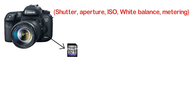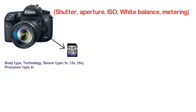The camera is very important. For example: body type, technology, sensor type, 1X, 1.3X, 1.6X crop factors, processor type, in-camera processing, future features, ISO range, noise reduction system, etc. — all of these are very important.